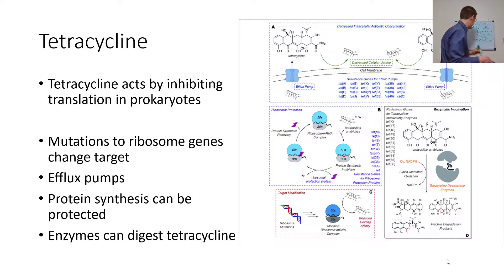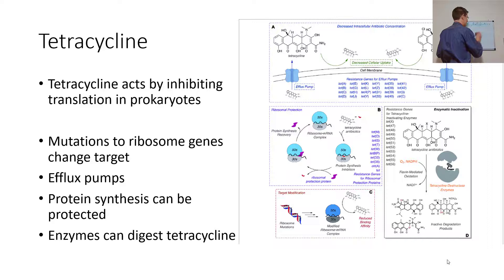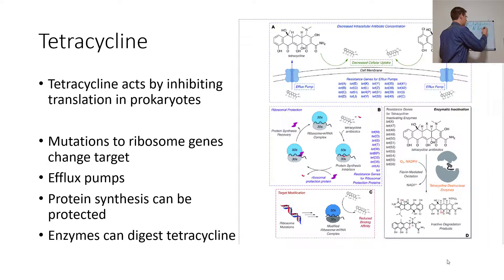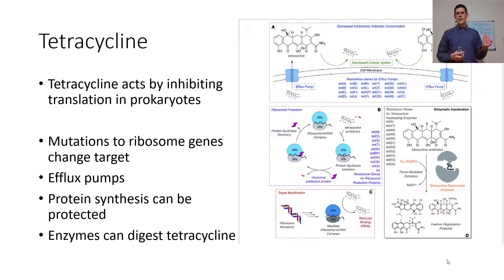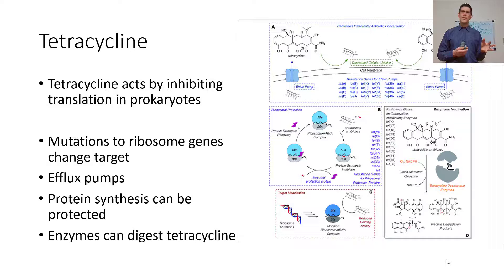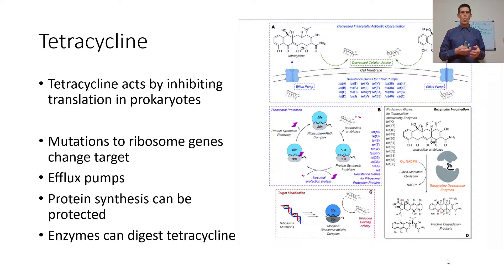What about tetracycline? It inhibits translation in prokaryotes — it attaches to the ribosome in a way that makes it ineffective at making new proteins. Its ring structure looks somewhat like nucleic acids, so the bacterium takes it up thinking it might be RNA, and then can't make proteins.